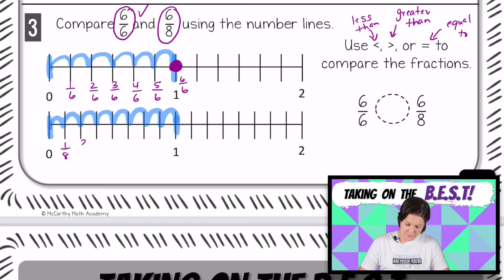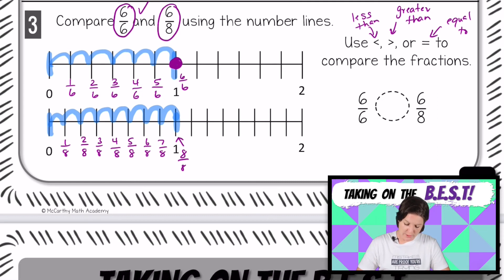So this would be 1/8, 2/8, 3/8, 4/8, 5/8, 6/8, 7/8. And then one would be 8/8, okay? But our fraction is 6/8, which is located right here. Okay, now if we compare the two fractions, bringing that other point down would be right there.